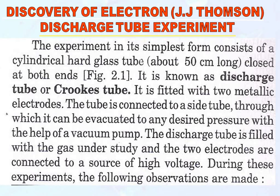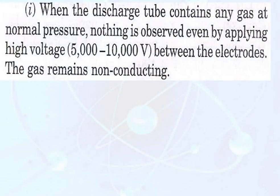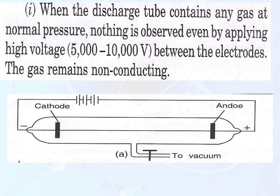The discharge tube is filled with gas under study and the two electrodes are connected to a source of high voltage. During these experiments, the following observations are made. When the discharge tube contains any gas at normal pressure, nothing is observed even by applying high voltage between the two electrodes, meaning the gas is non-conducting. This was the structure showing the discharge tube with the anode and cathode attached to the high voltage battery and an evacuated tube attached to the vacuum pump to maintain desired pressure.